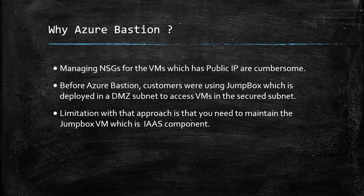Why Azure Bastion? When you deploy a resource — let's say a VM in a VNet — you can connect to the VM using the public IP address. To do so, you need to allow or open port 3389 or port 22 in the network security group, either at the subnet level or at the NIC level. If you have multiple VMs deployed, managing the NSG rules becomes cumbersome.